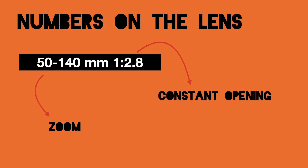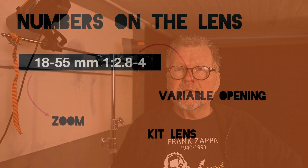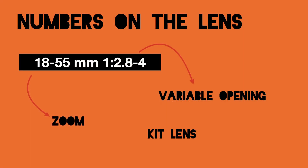Sometimes there are two numbers for the focal length, and that's on a zoom lens. Some lenses — often the better ones — have a constant number for the aperture. Some other zoom lenses show two different focal lengths, and some have a variable opening. In this case it's a so-called kit lens.